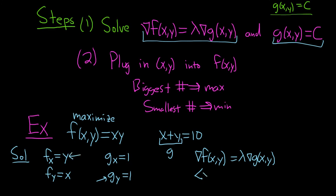Now we simply replace this with what it is. This is the partial with respect to x, which we said was y. And the second component is the partial with respect to y, which we said was x. That's equal to lambda, and these are both 1 and 1. And we also have this condition here, x plus y equals 10.